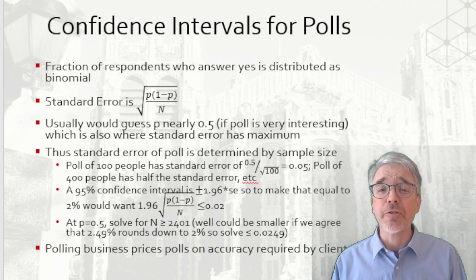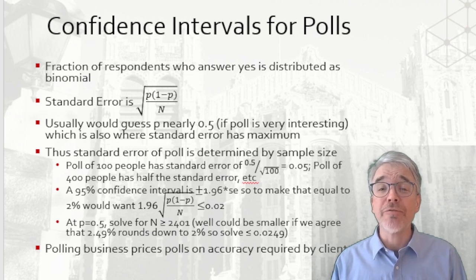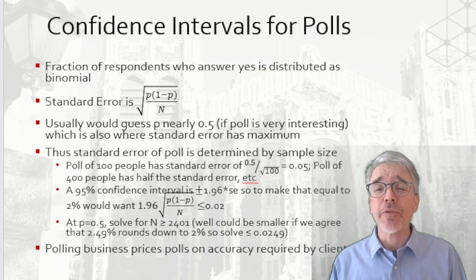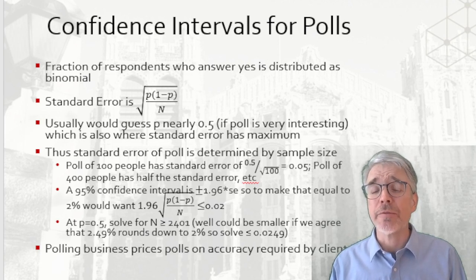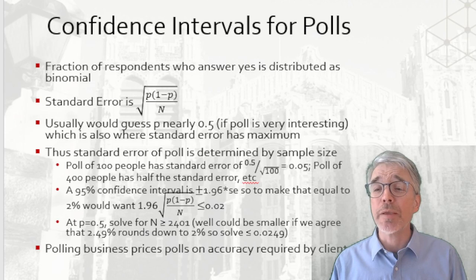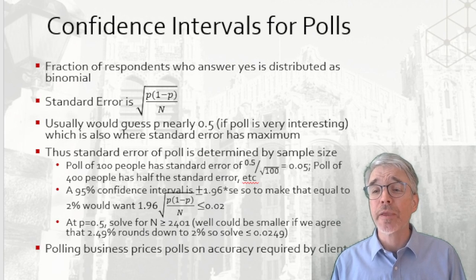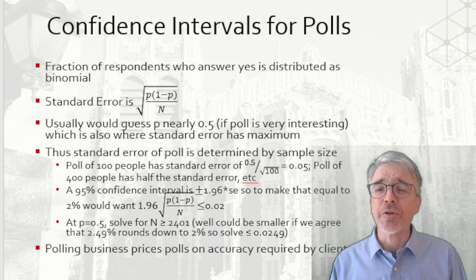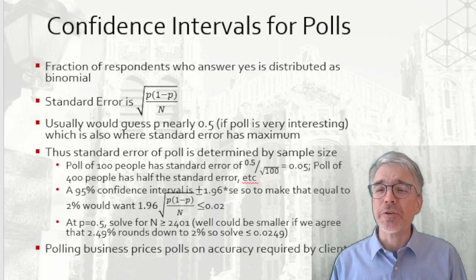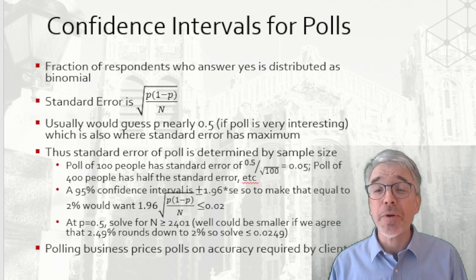An interesting poll is going to have a probability close to 50%, and that's also where the standard error has its maximum value. So if we want to be a little bit conservative, set p equal to 0.5 in the standard error formula. Then the standard error is pretty much determined by the sample size. A poll of 100 people would have standard error 0.5 divided by the square root of 100, so that's 5%. If I poll 400 people, that's four times as many, and the square root of 4 is 2, so that has half the standard error.